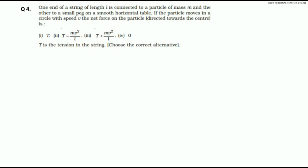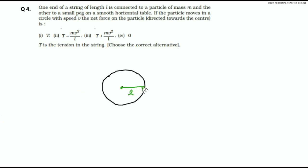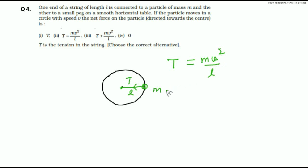One end of a string of length l is connected to a particle of mass m and the other to a small peg on a smooth horizontal table. If the particle moves in a circle with speed v, what is the net force on the particle? As you know, if any object moves in a circular path, there is a force towards the centre called centripetal force. Here the centripetal force is in the form of tension T in the string. So T equals mv squared by r, where r is the length l. The net force acting is T, so the answer is mv squared by r.